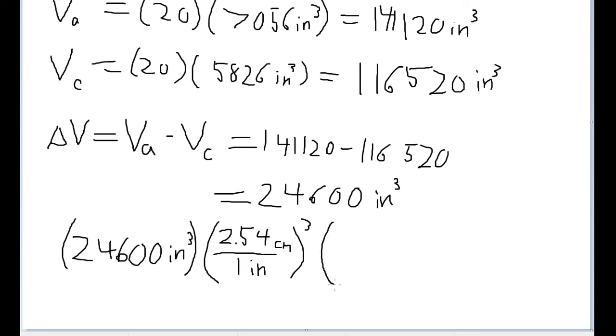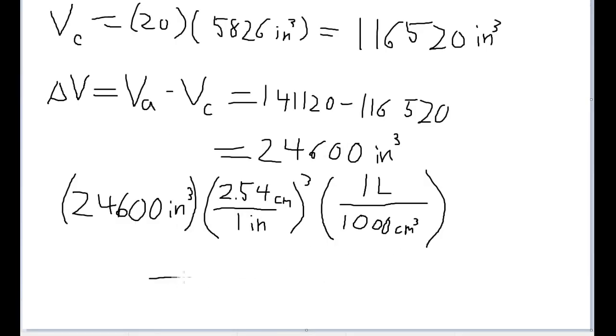And now let's use the conversion rate between cubic centimeters and liters. And so that is, for every one liter, that is 1,000 cubic centimeters. All right, there we go. And now just simply do the chain link conversion, plug it into your calculator. And we get an answer of about 403 liters.